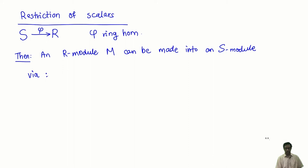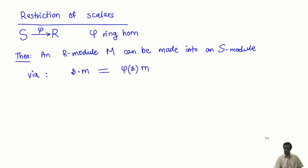How do you do this? To do this you must define a scalar multiplication. M is already an additive group. I take an element s from S and an element m from my module, and I need to define scalar multiplication s·m. Since I am given a ring homomorphism, I apply φ to s, thereby obtaining an element of the ring R. Now M is an R-module, so I know how to scalar multiply m with the scalar φ(s) which comes from R. This is the definition of scalar multiplication by elements of S, and it is easy to check the properties — one just has to check that all the axioms of a module are satisfied.